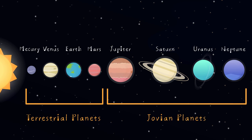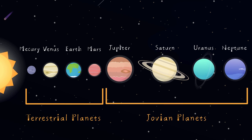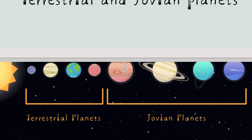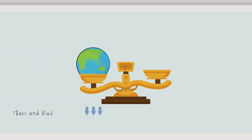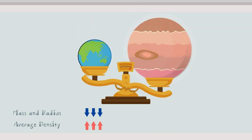There are big differences between terrestrial and Jovian planets. Comparing terrestrial and Jovian planets. First, terrestrial planets have a small mass and radius, and a high average density. Jovian planets, on the other hand, have a large mass and diameter, with a low average density.